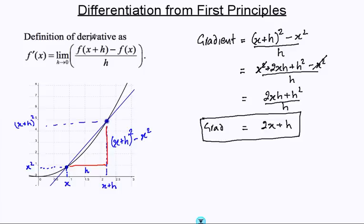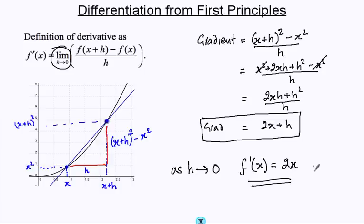And the final trick is this bit here, where we slide the point. So, as we slide the point, h tends towards 0, and we'll get the gradient function. h tends towards 0. This becomes 2x. There's our answer.